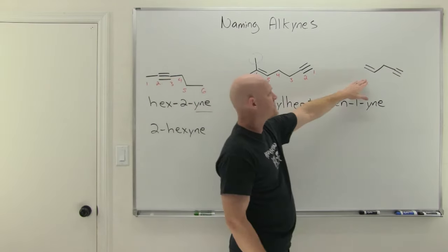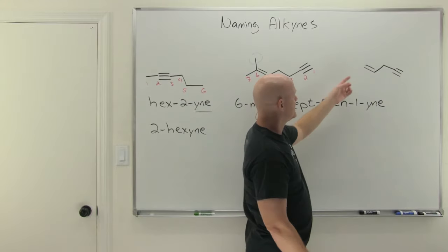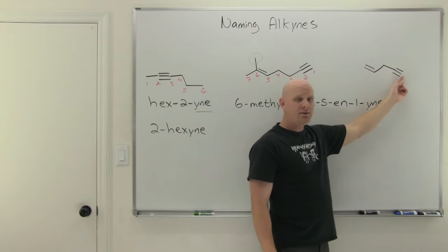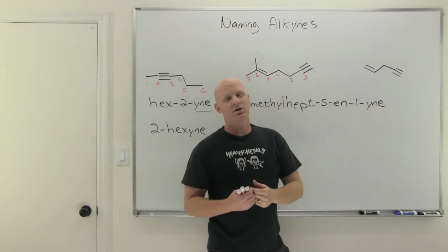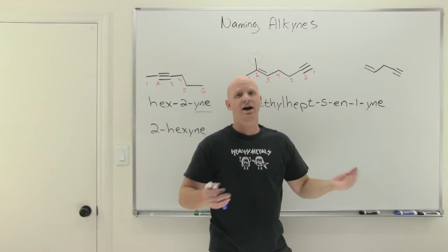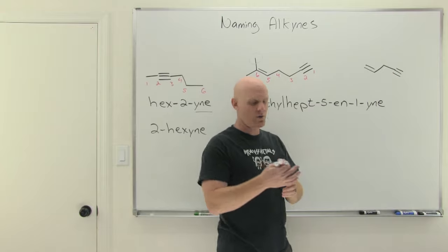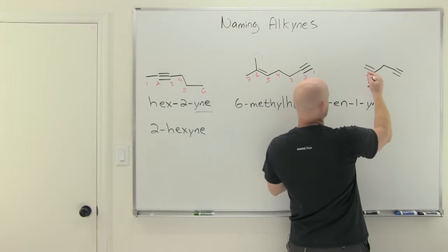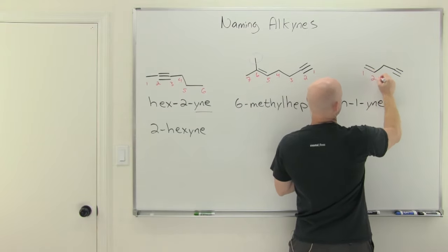Finally, this last one. If I number this left to right, the alkene would be at position one. If I go right to left, the alkyne would be at position one. That's when there's a numerical tie. In this case, if there's a numerical tie, the alkene gets the priority, not the alkyne, just the way they decided it. So we'll number this left to right as a result.